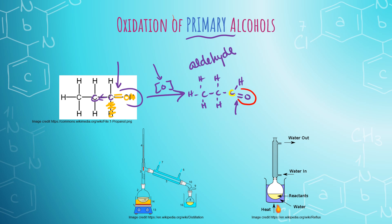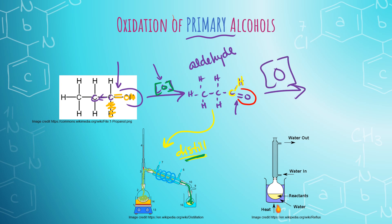What's fun about this aldehyde is that this carbon still has a hydrogen that could be stolen — we could further oxidize this aldehyde into another product. So if I want to keep the aldehyde, I'm going to have to distill my product. In distillation, the heat causes the aldehyde to evaporate; the vapor travels through the condensing tube where cold water causes it to condense back to a liquid, and the aldehyde drips into a collecting flask. To keep the aldehyde, I need just a little bit of oxidizing agent and I need to distill out the product. If I want to continue the oxidation, I use excess oxidizing agent.